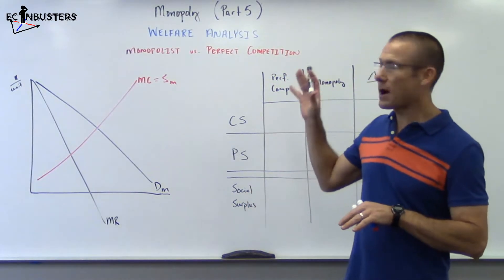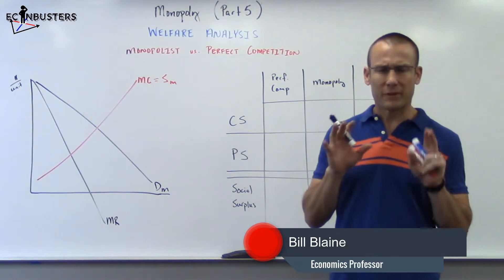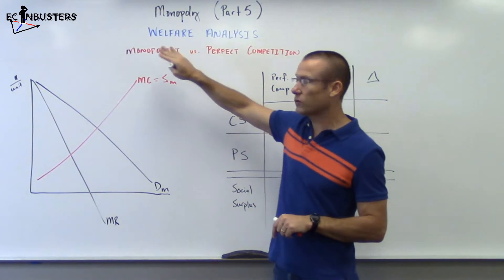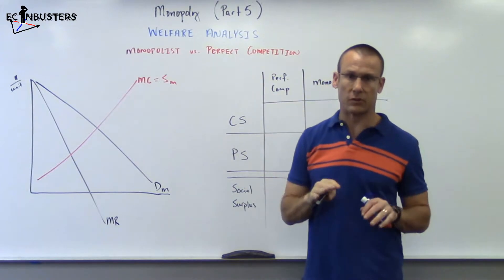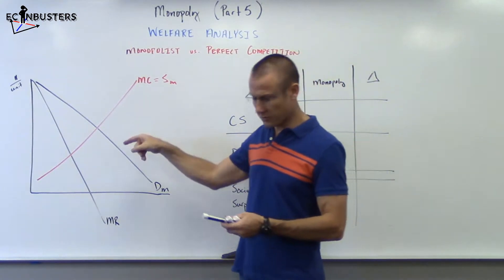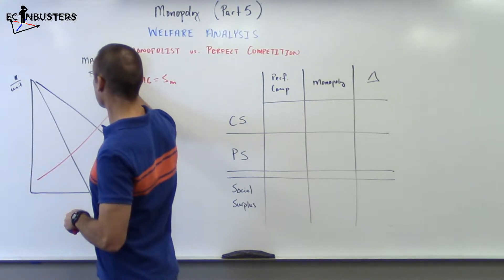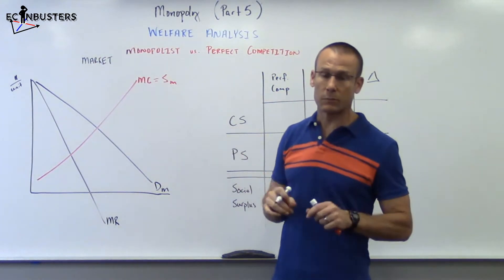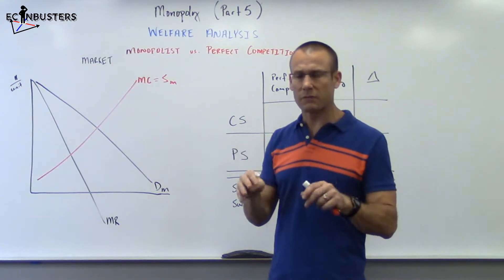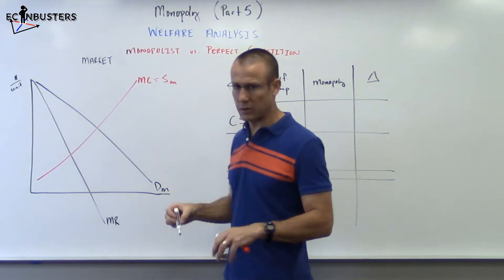Hey everybody, we're on monopolist part five. We're going to do a welfare analysis — we're going to compare the monopolist to perfect competition. I'm going to use this graph both to think of perfect competition and the monopolist. This graph is the market. If it was perfect competition it would not be a single firm, but from the monopolist standpoint the market is the firm.